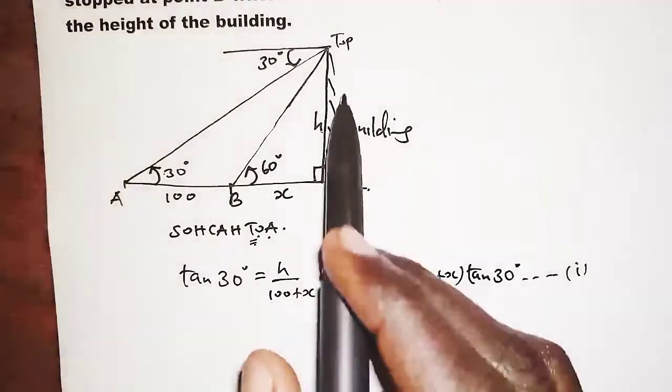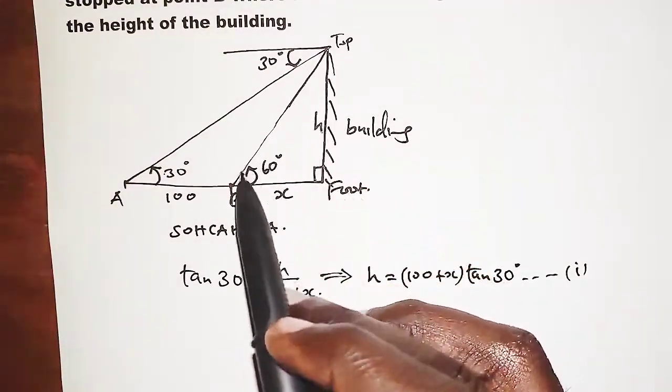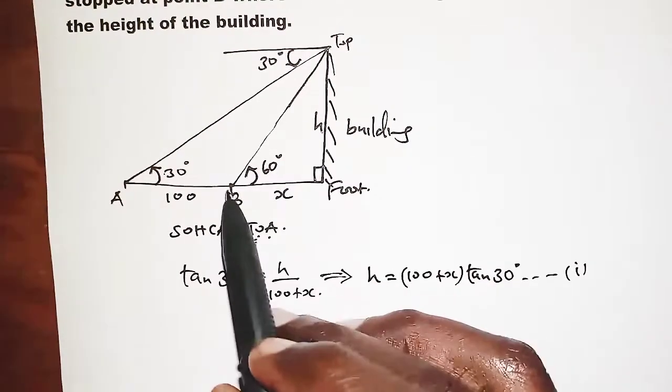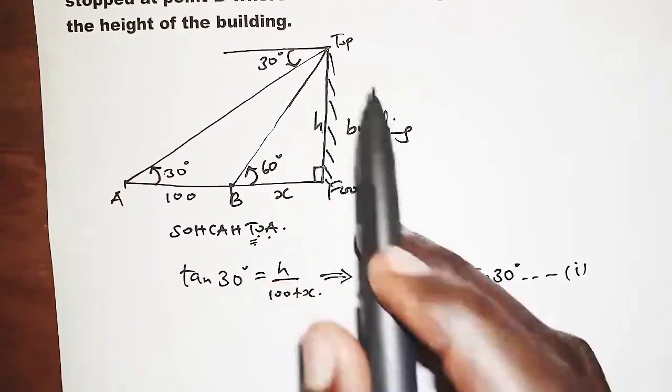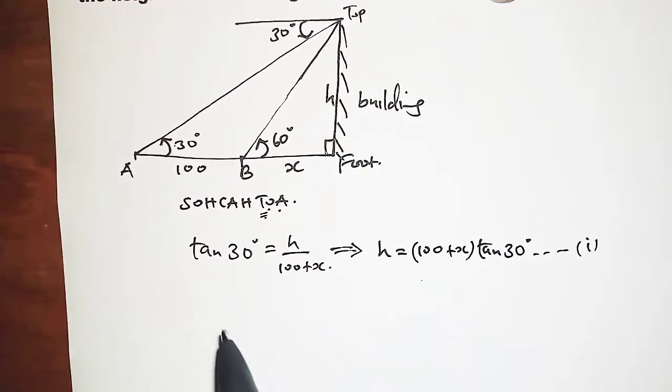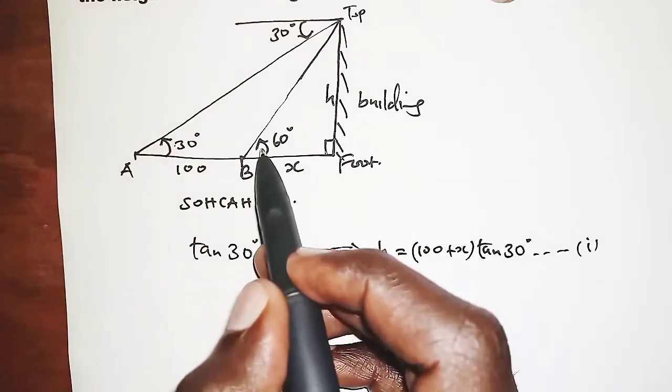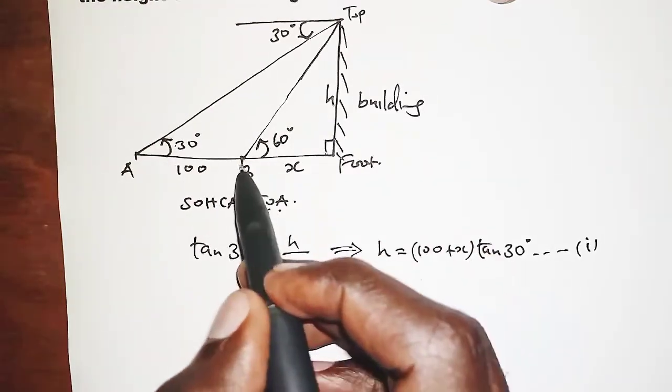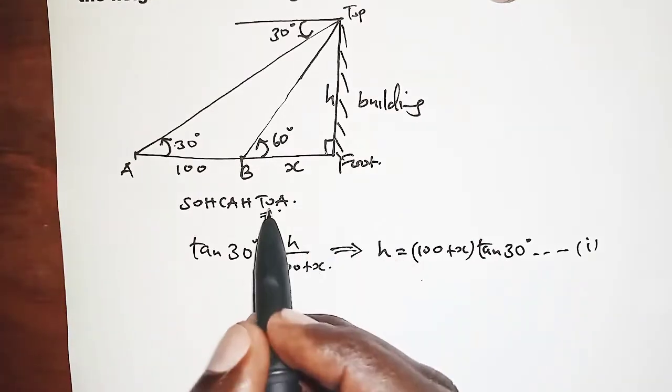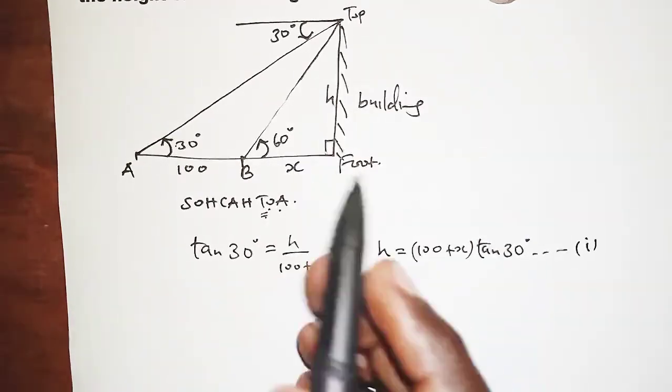Now the second equation: we consider this other triangle from the top to point B and to the foot and back to the top. So that triangle, again, we have angle 60° related to the height and the base X by tangent. So we have opposite and adjacent.